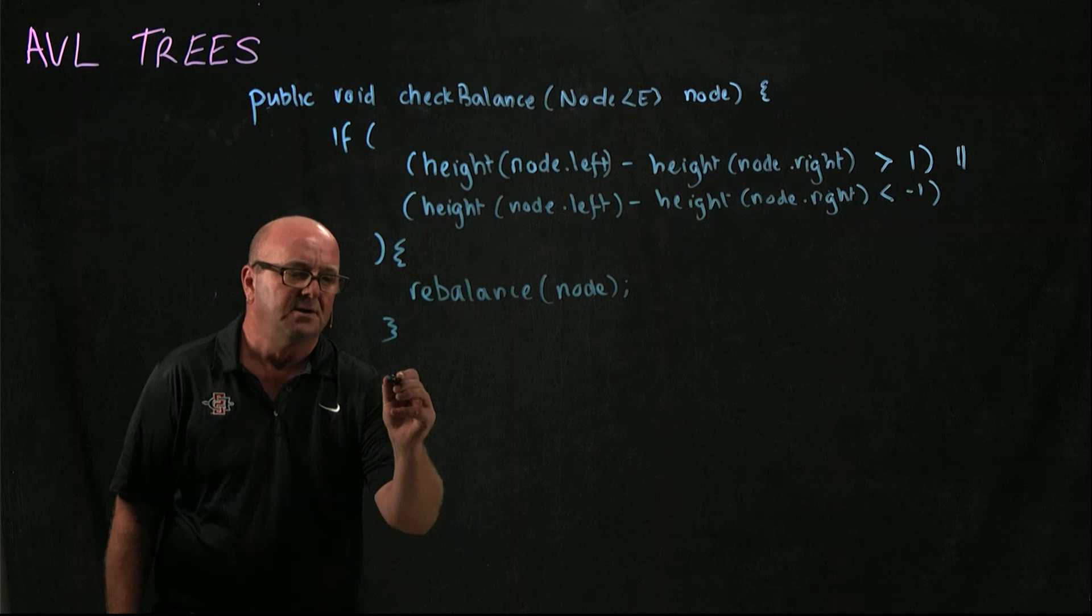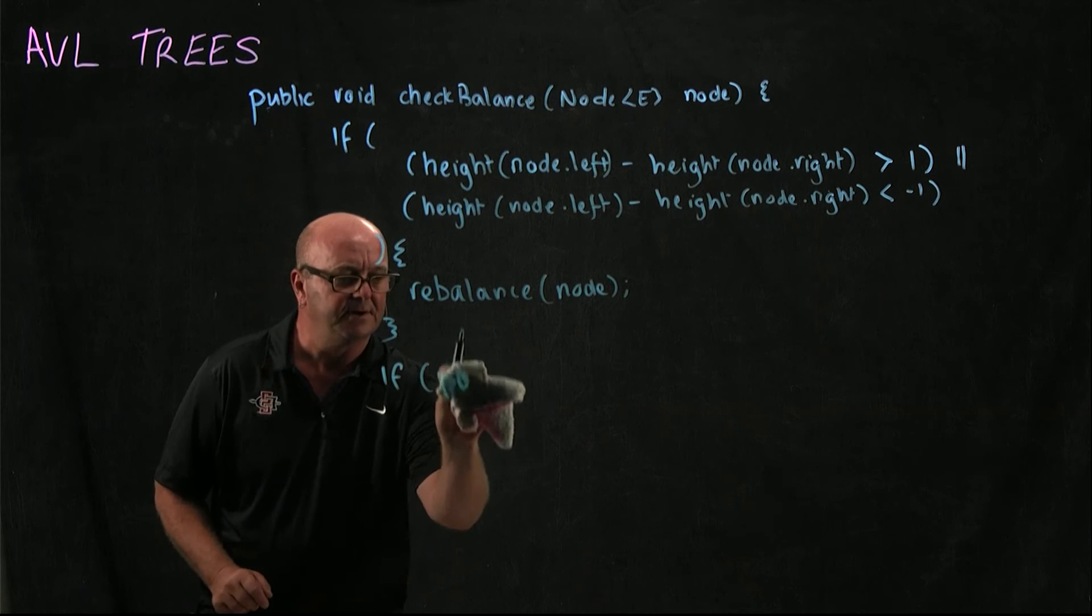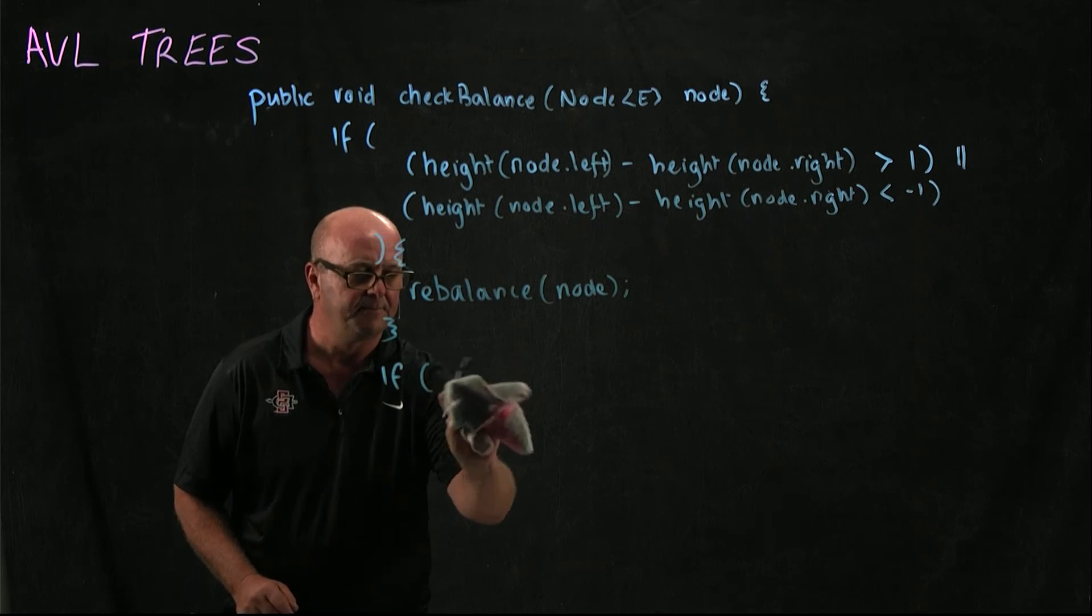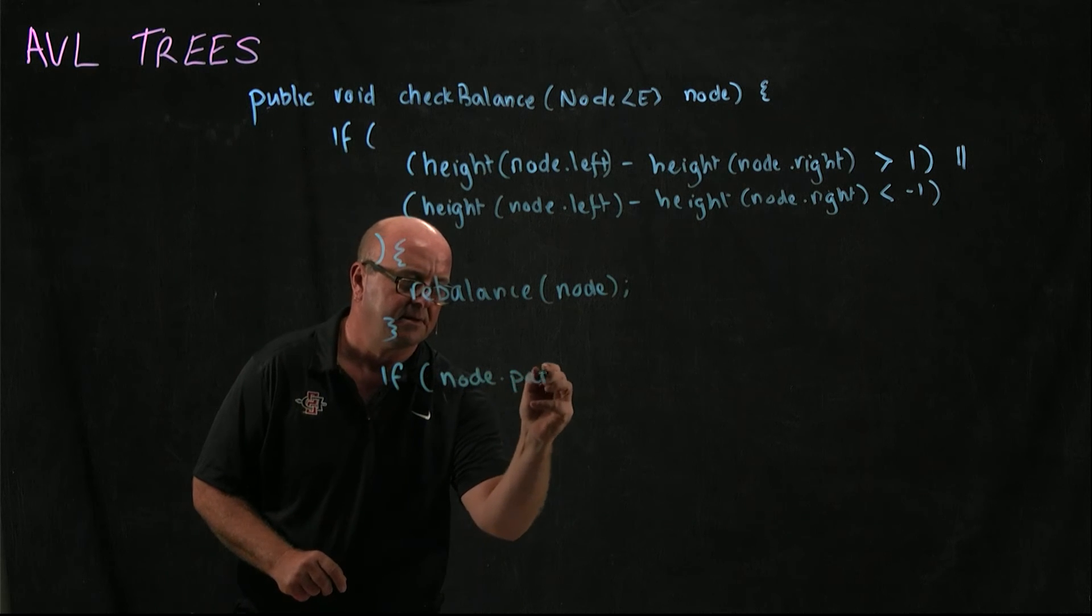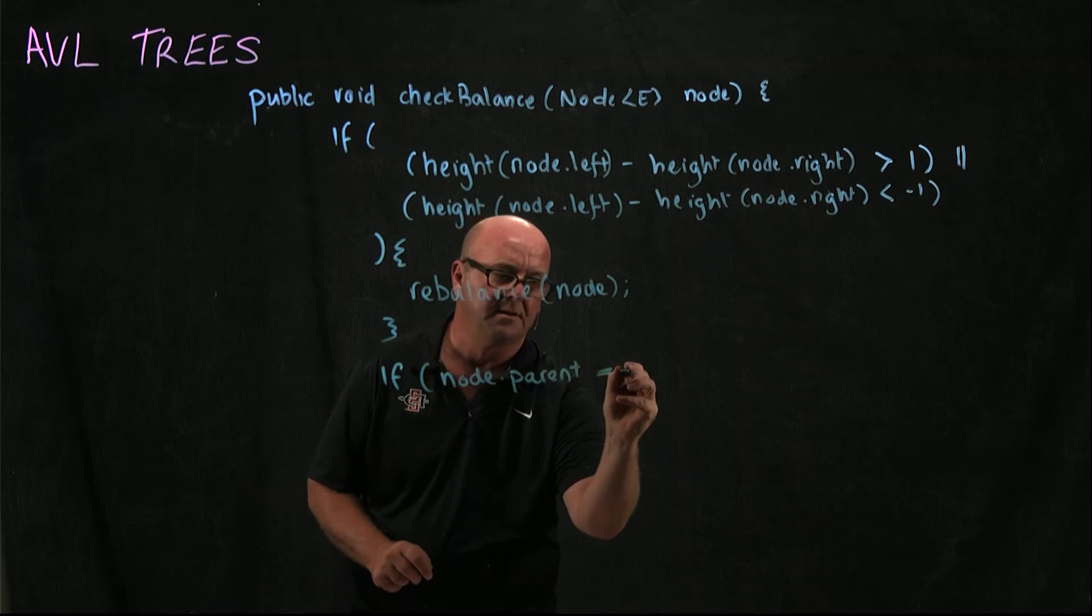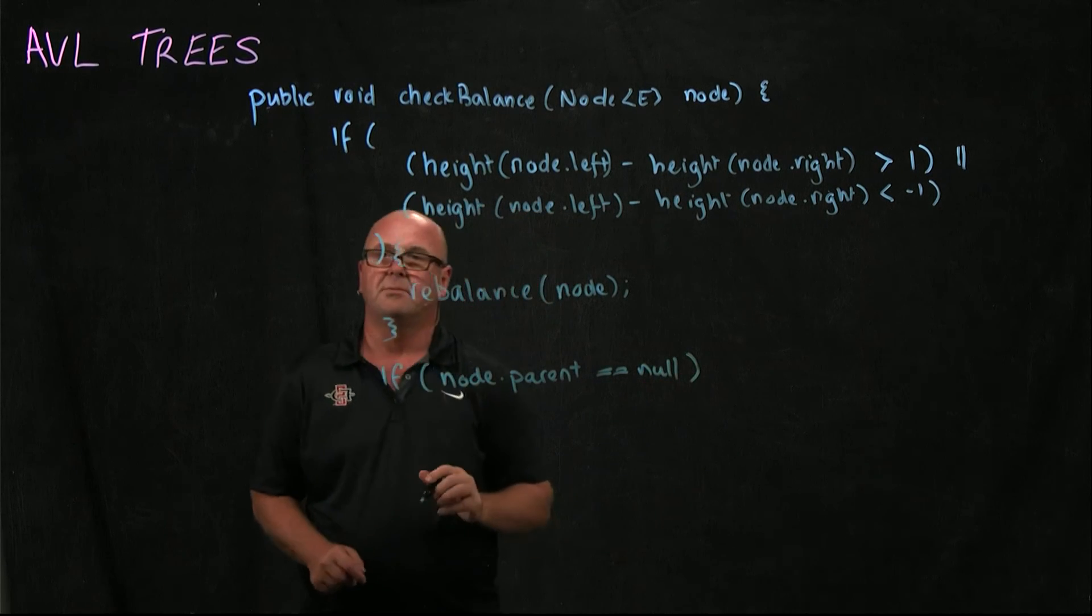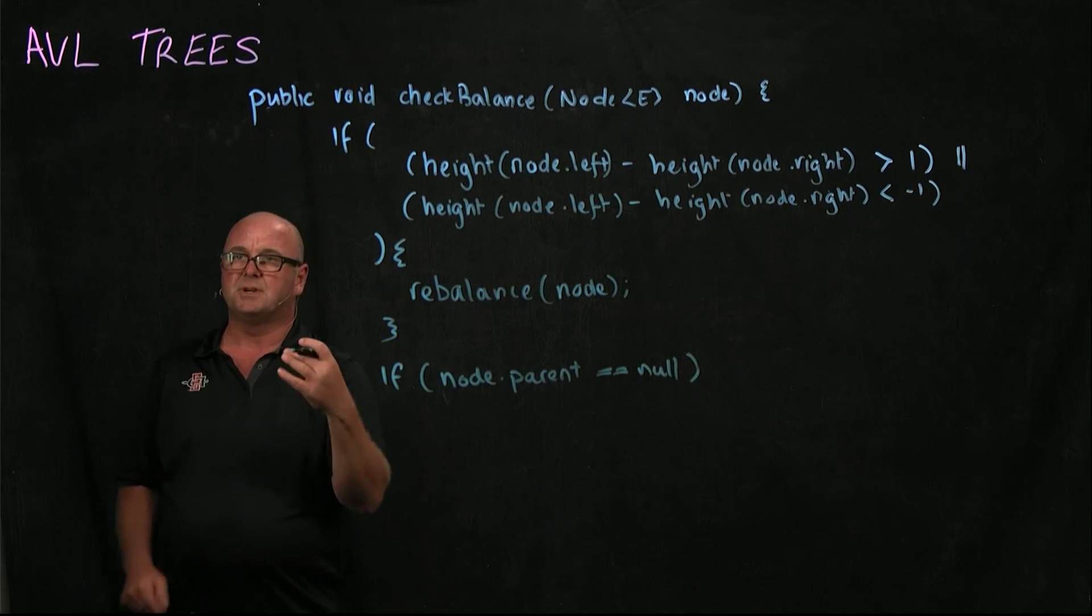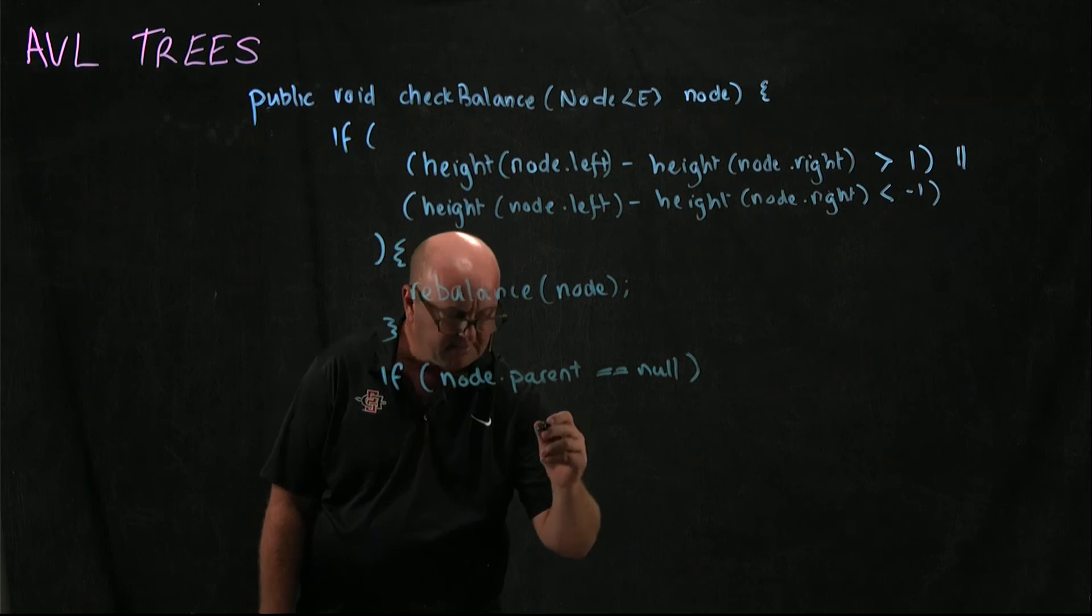We're going to check if the node's parent is null. We're at the root of the tree and we don't need to go any further, so we can just return.